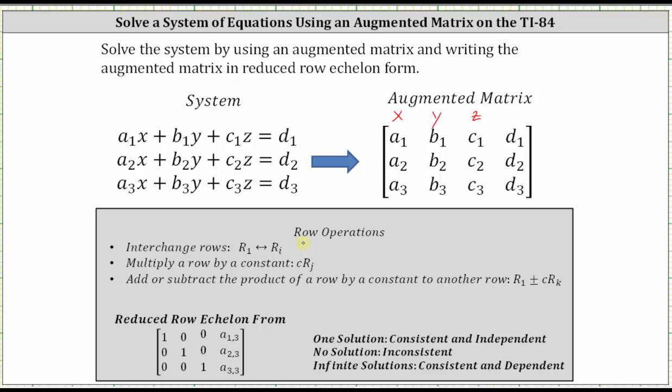To write the augmented matrix in reduced row echelon form, we must have a diagonal of ones, and then all the elements above and below the ones must be zero.